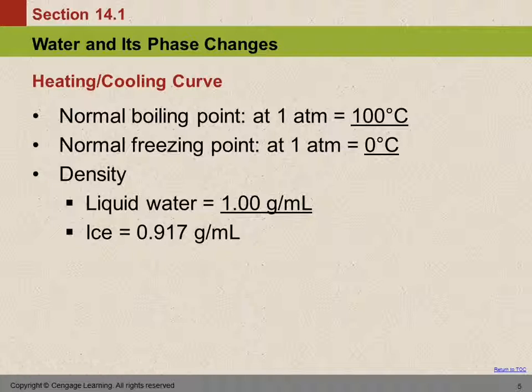Those two flat places in the heating curve help us understand why these two temperatures are so useful in determining the Celsius temperature scale — developed probably in the 1600s or 1700s. You can make something be at zero degrees Celsius by putting ice and water together, letting it equilibrate — zero degrees. You want something that's 100 degrees, you boil some water — 100 degrees. You can make a thermometer and calibrate it without using any fancy equipment.